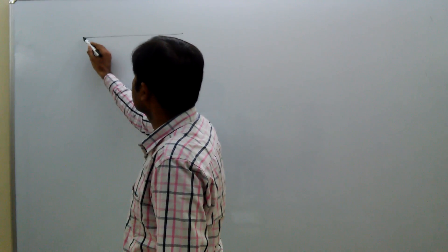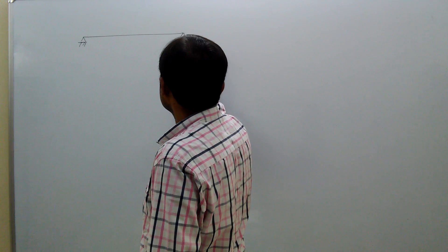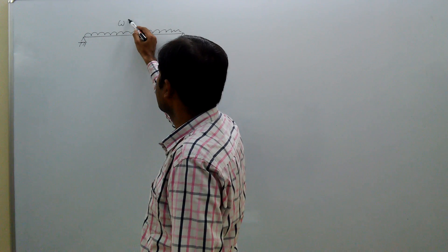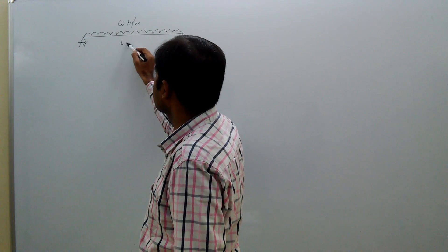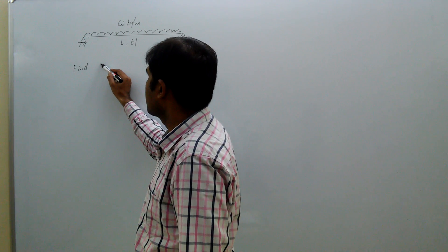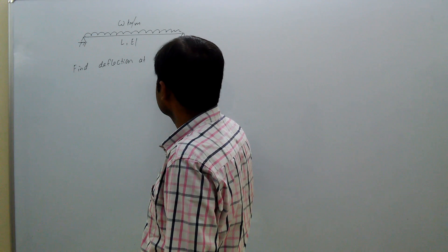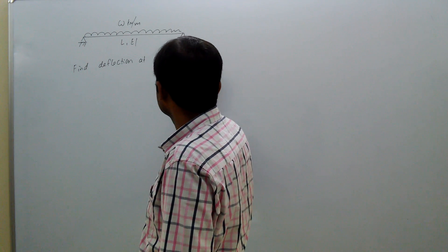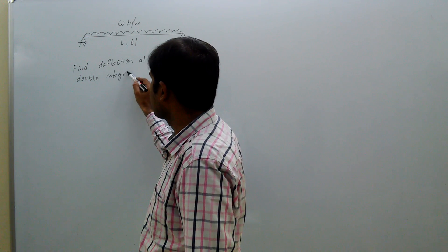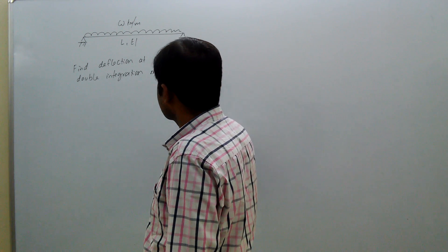This simply supported beam carries UDL on its entire span, that is W kN per meter, with span L and flexural rigidity EI. Find the deflection at center by the double integration method.